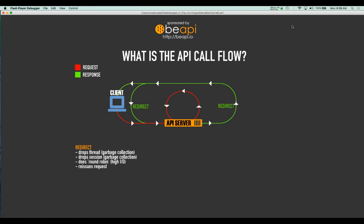Let's talk about how the API server talks to itself, because it actually does talk back to itself, and it does this one of two ways. The first way, probably the most familiar, is a redirect. Whenever you want to redirect back to your API server — say to call another endpoint — each time you do a redirect, you drop a thread, you issue a response, and you drop the session. When you drop the thread and session, that thread will hang.